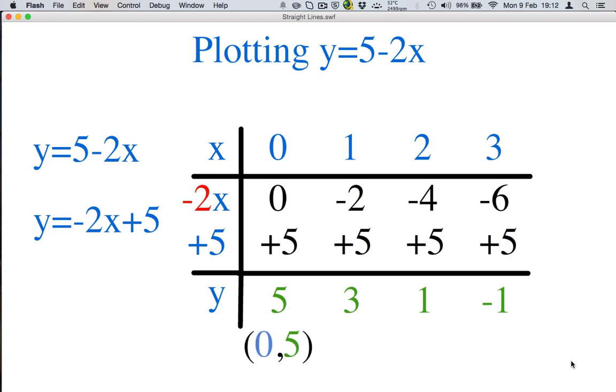So, 0 and 5 for the first one. Can you guess the rest? Okay. 1 and 3, 2 and 1, and 3 and minus 1. Okay. Let's plot these.